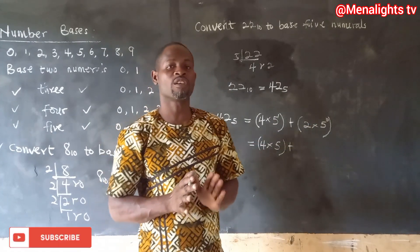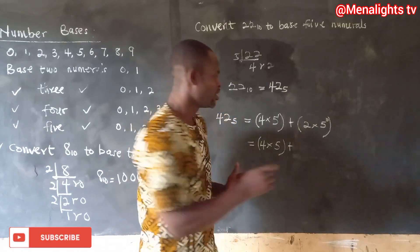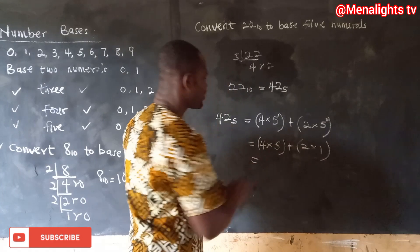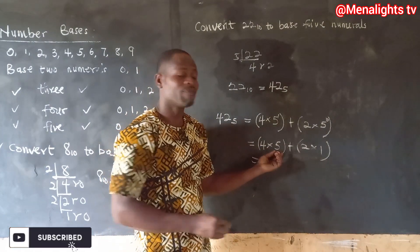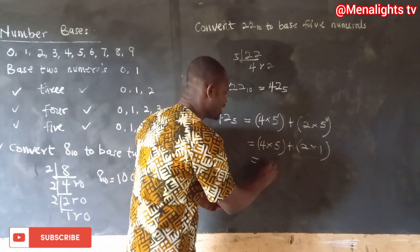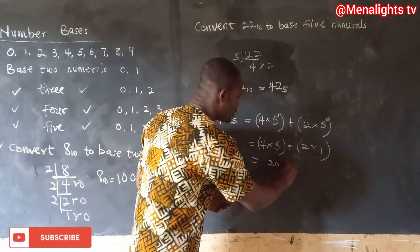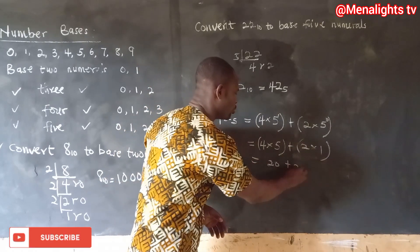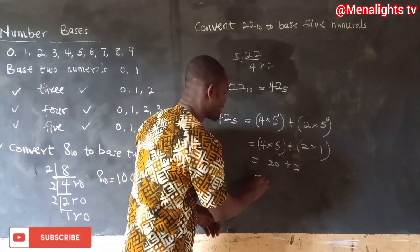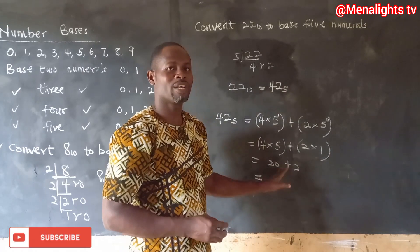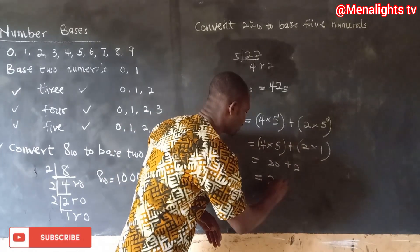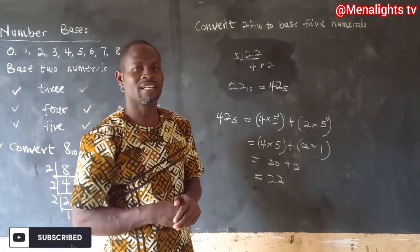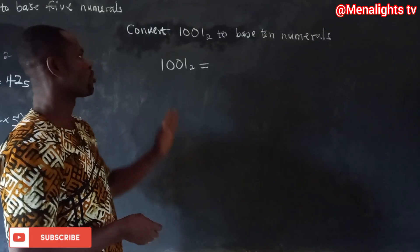Five to the exponent one is five, so we have four times five, which gives us 20. Any number with an exponent of zero equals one, so two times five to the zero is two times one, which is two. Adding 20 plus 2 gives us 22, confirming our result in base 10.